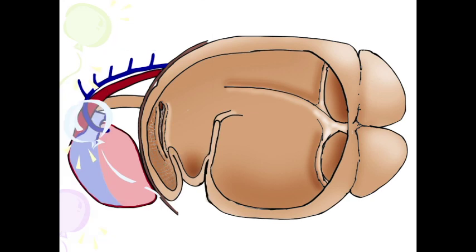Here we can see the esophagus and the rumen, and we can now see the reticulum. Notice that the reticulum is going to be up against the diaphragm on the left side of the animal, so it's going to be just opposite of the heart. If we have hardware disease and a nail or something penetrates through the reticulum, we can get traumatic reticulopericarditis where we get a pericardial infection. Often at necropsy, you will run your hand between the reticulum and the diaphragm and there may be a number of adhesions there, which may be incidental findings. These animals are pretty tough when it comes to peritonitis.